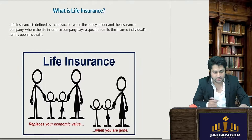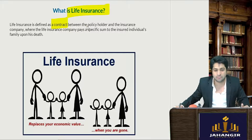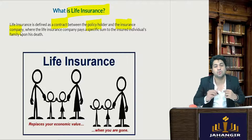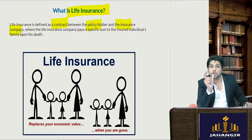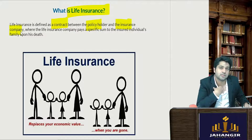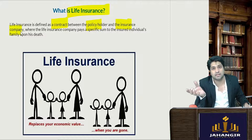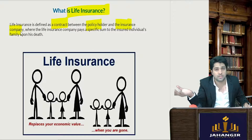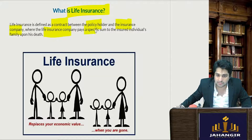Life insurance is a contract between the policyholder and the insurance company, which states that till a certain time period the holder will keep paying the insurance premium. During that time, if the person dies, then the insured amount will be given to the beneficiaries. If he survives that time period, then no amount will be given to the beneficiary, and that is how the insurance company earns.